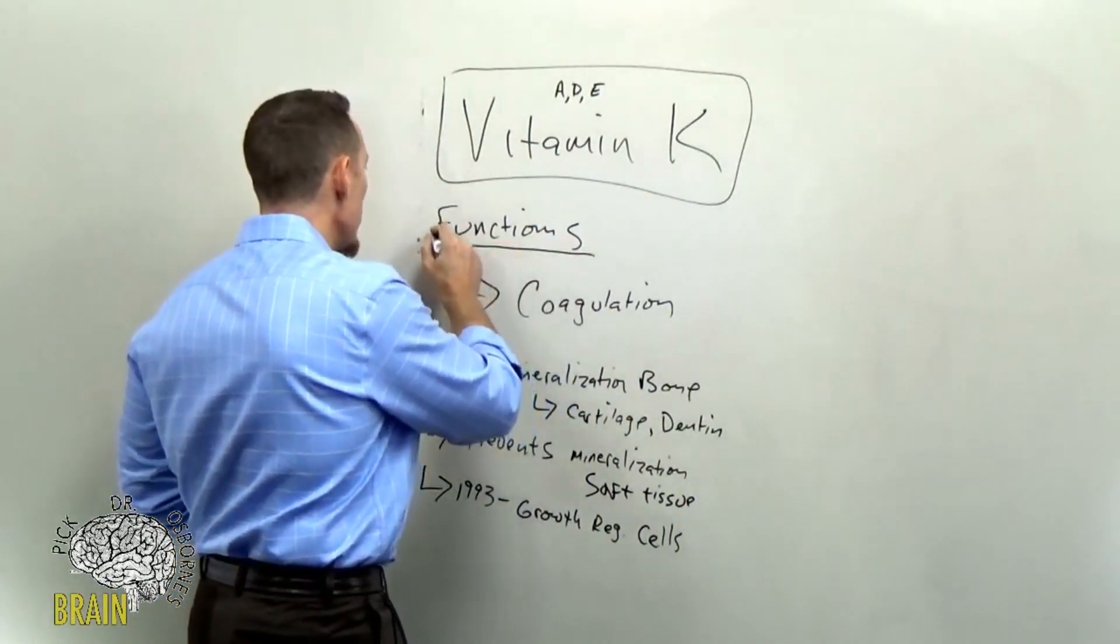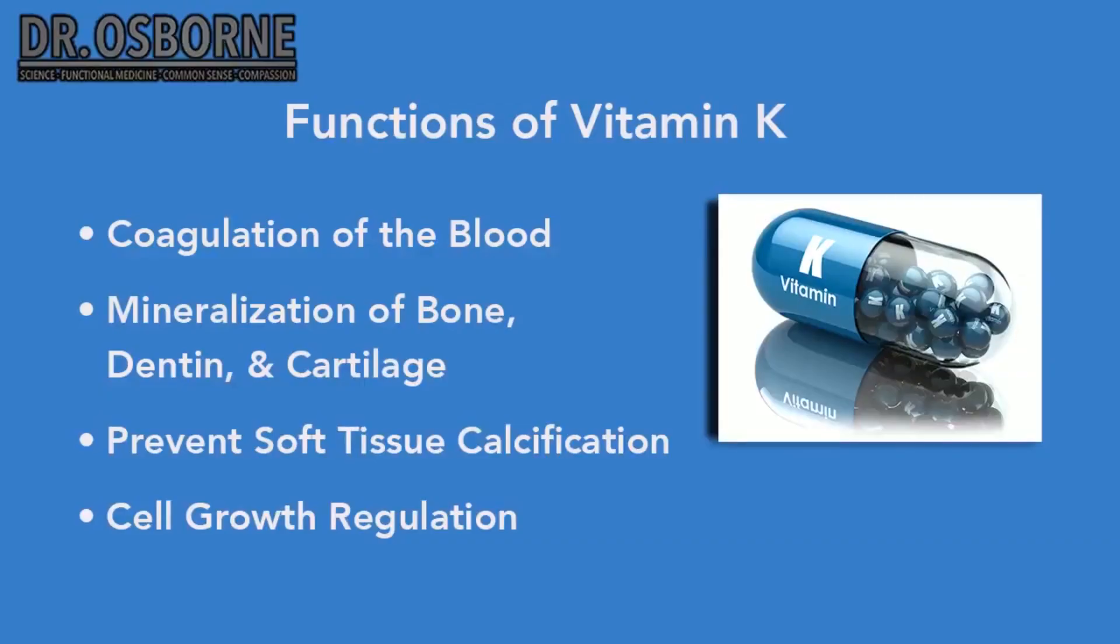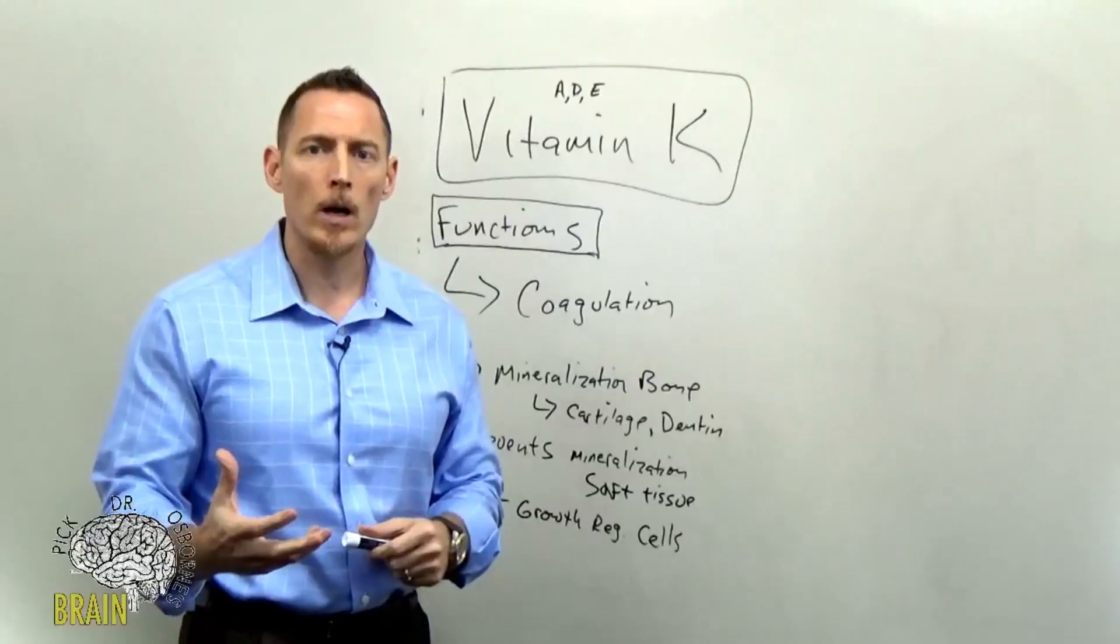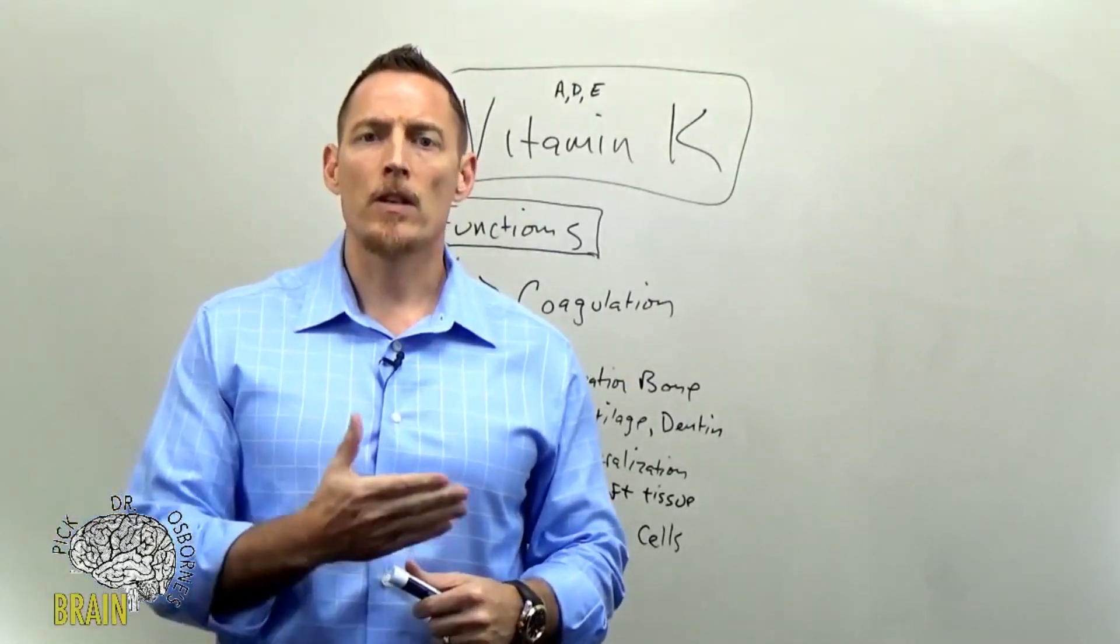And so understanding this now will help you understand what some of the symptoms, why some of the symptoms and some of the diseases with vitamin K actually happen. So let's kind of break some of those down. Remember I said earlier that the function of vitamin K is in blood coagulation? Well, the deficiency of vitamin K can manifest in a number of different ways.